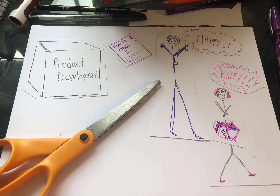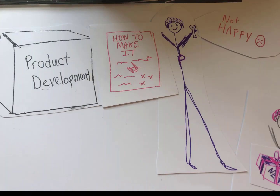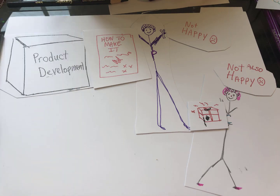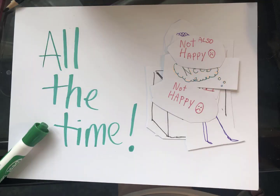And that's the goal: happy customers, happy plant. If product development can't deliver a good product process to the plant, the plant won't be happy. And if product development doesn't deliver a great product to the customer, the customer won't be happy. How often does that happen? It turns out it happens all the time.